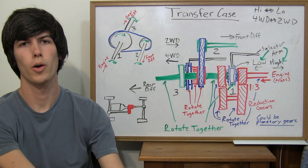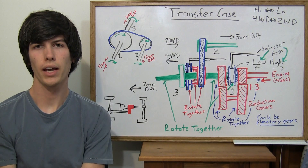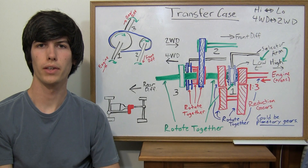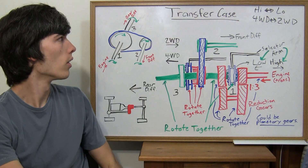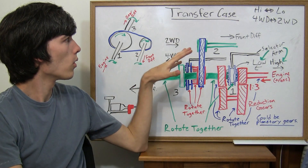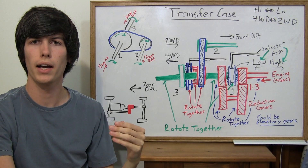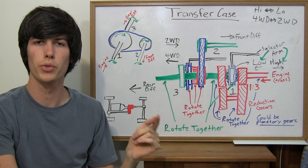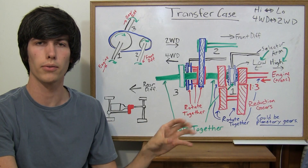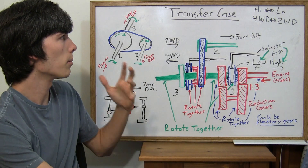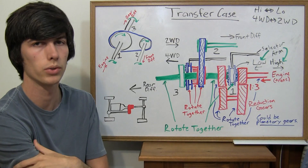Hey everyone, in this video I'll be explaining a transfer case. A transfer case is used in four-wheel drive vehicles to send power to both the front and rear tires. I'm going to go over how it switches from high to low gear and how it switches from two-wheel drive — just the rear tires — to four-wheel drive, the rear and front tires. That's one of the main goals of a transfer case in a part-time four-wheel drive vehicle.